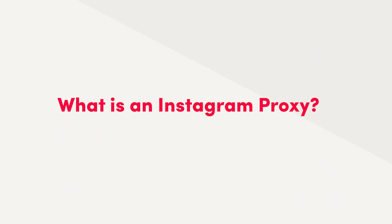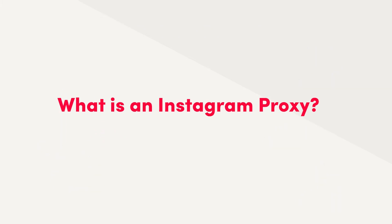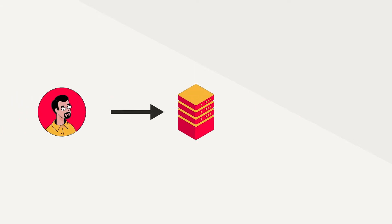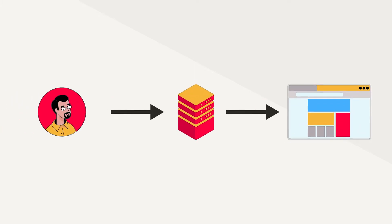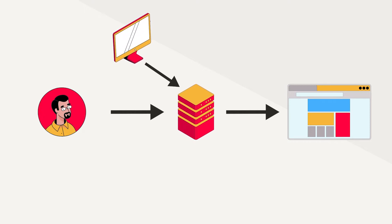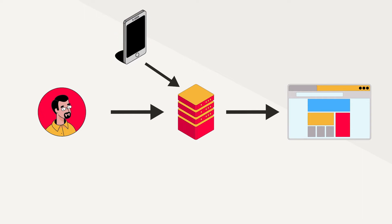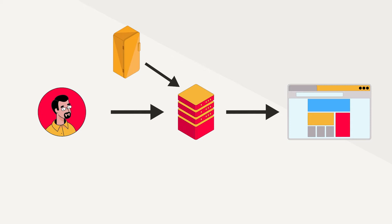But wait — what is an Instagram proxy? It's an intermediary between you and Instagram, or any website on the internet. This intermediary is usually some other device connected to the web somewhere in the world — for example, a phone, a computer, or even a smart fridge. The only thing that matters is that this device has a different IP address to your own.